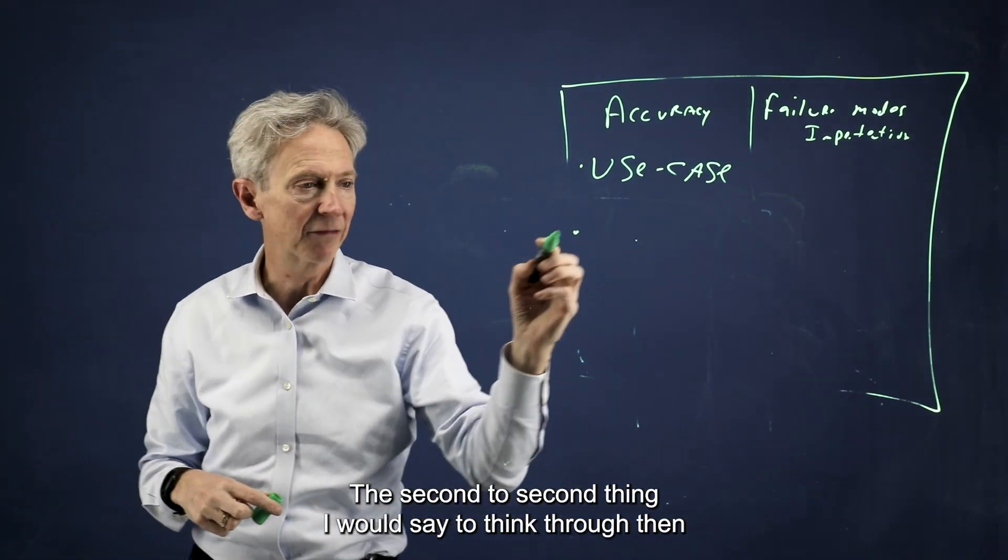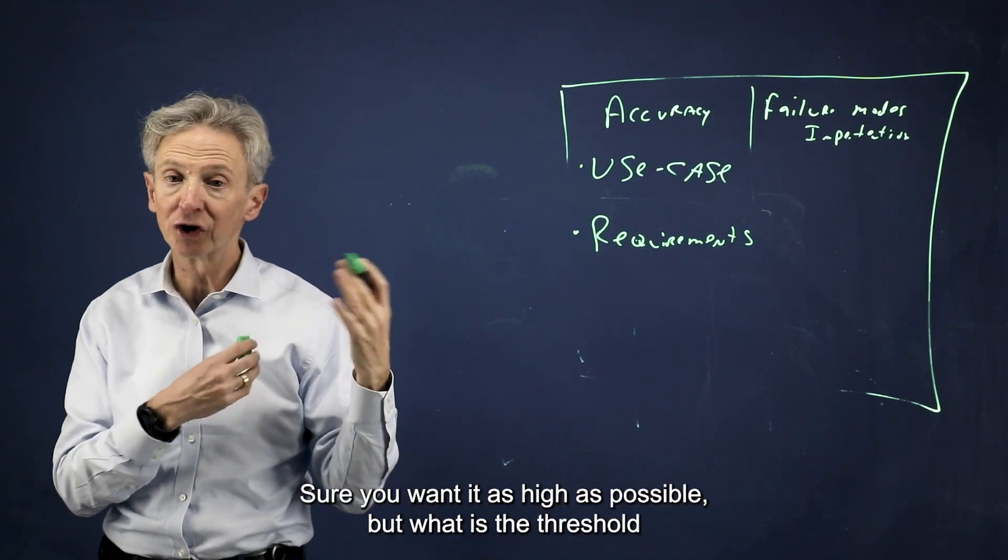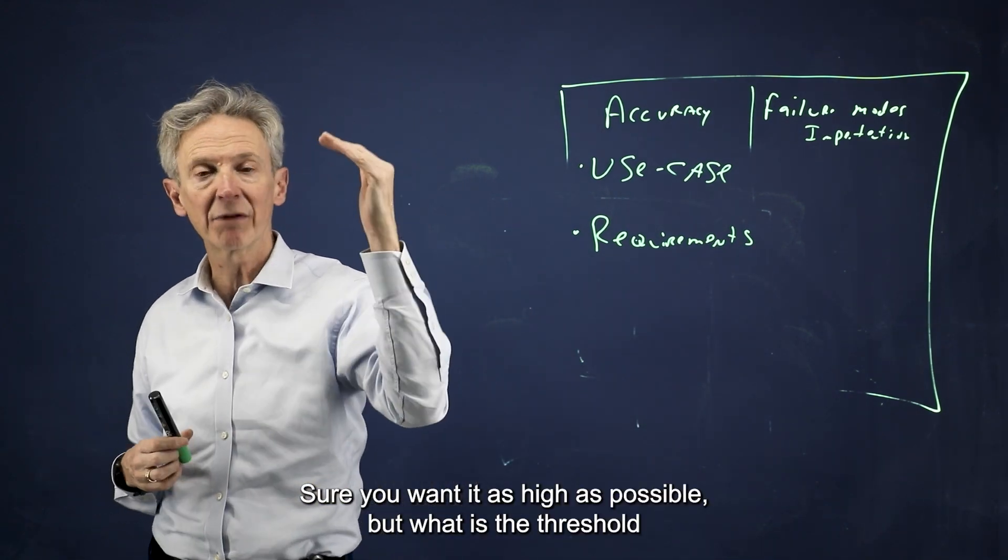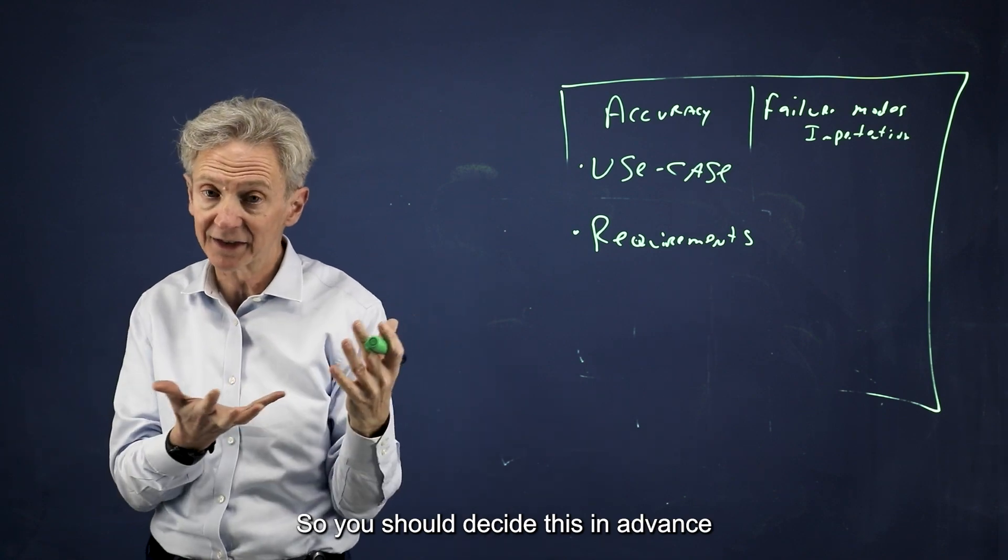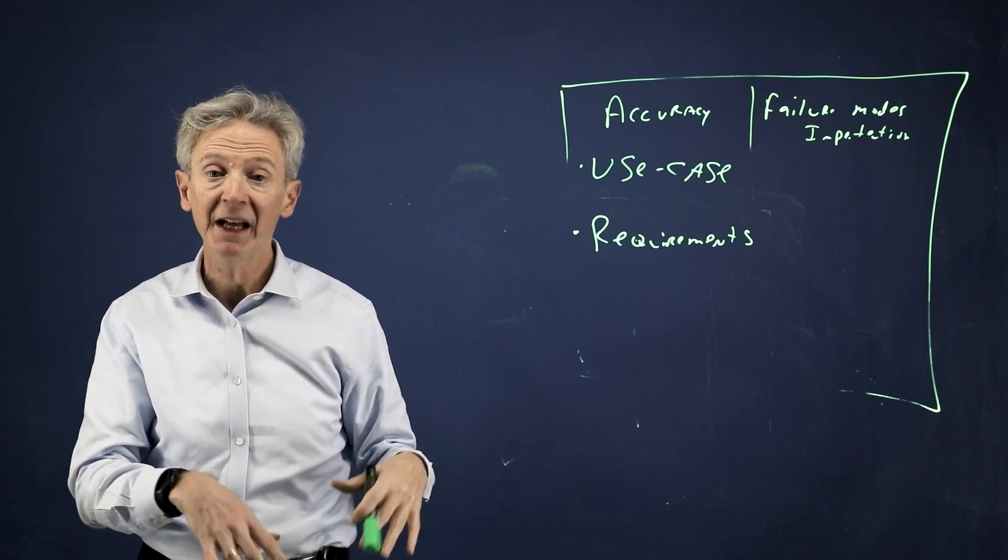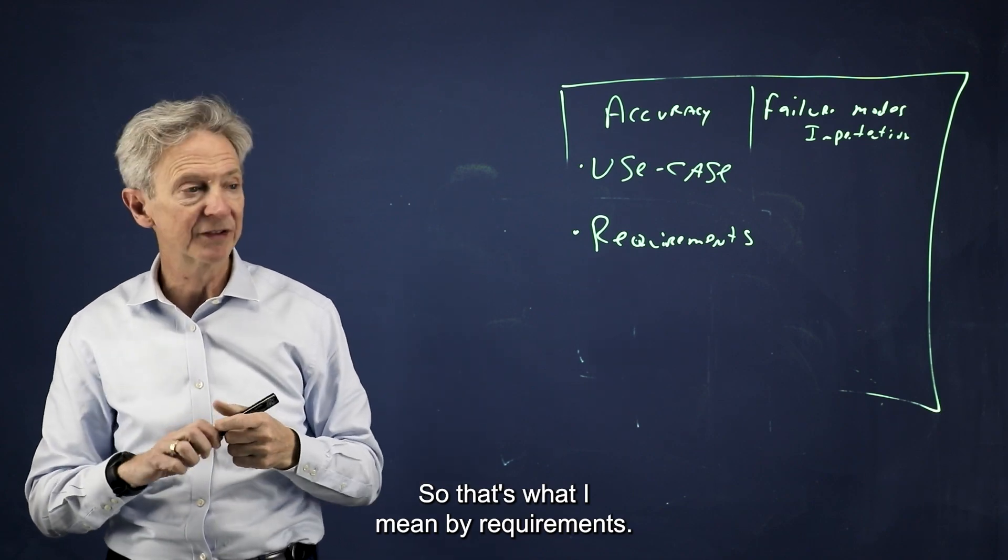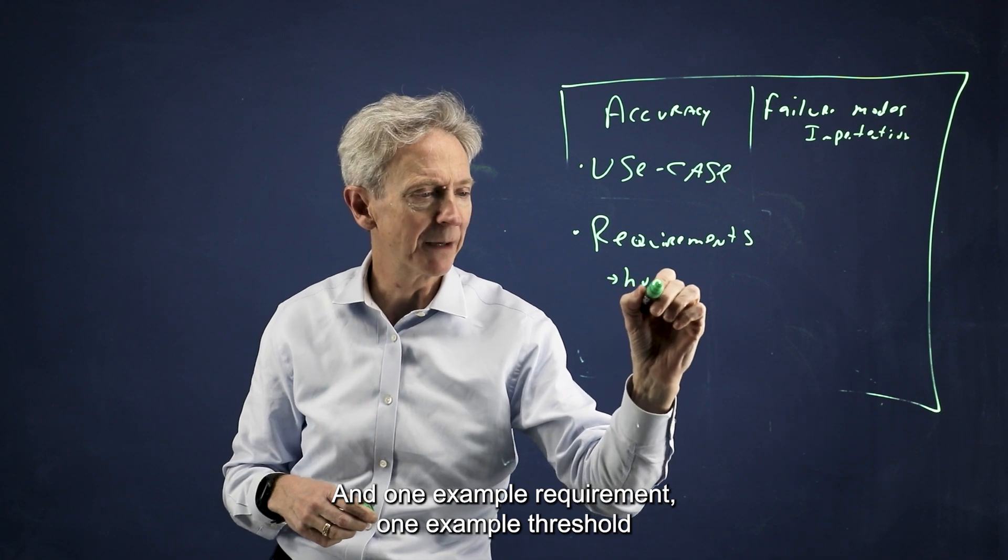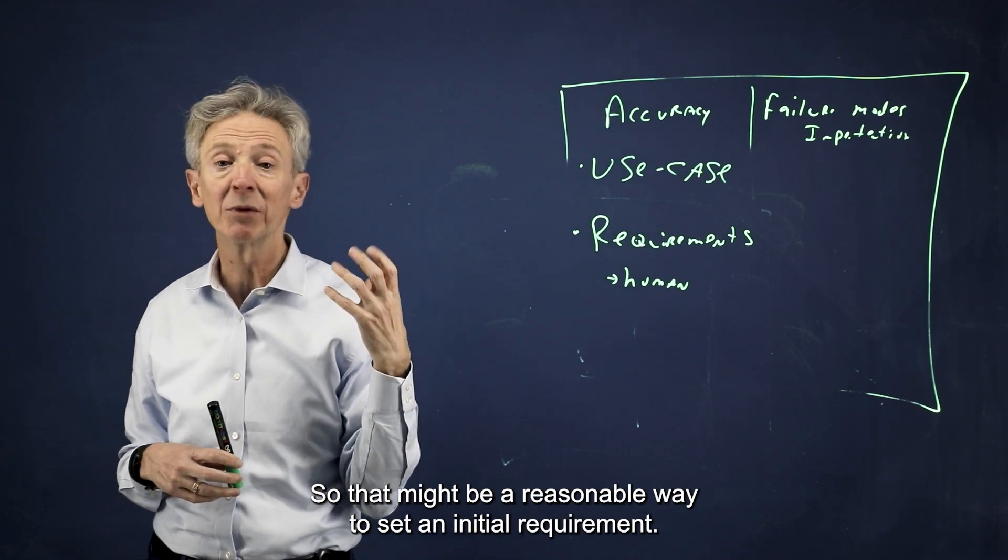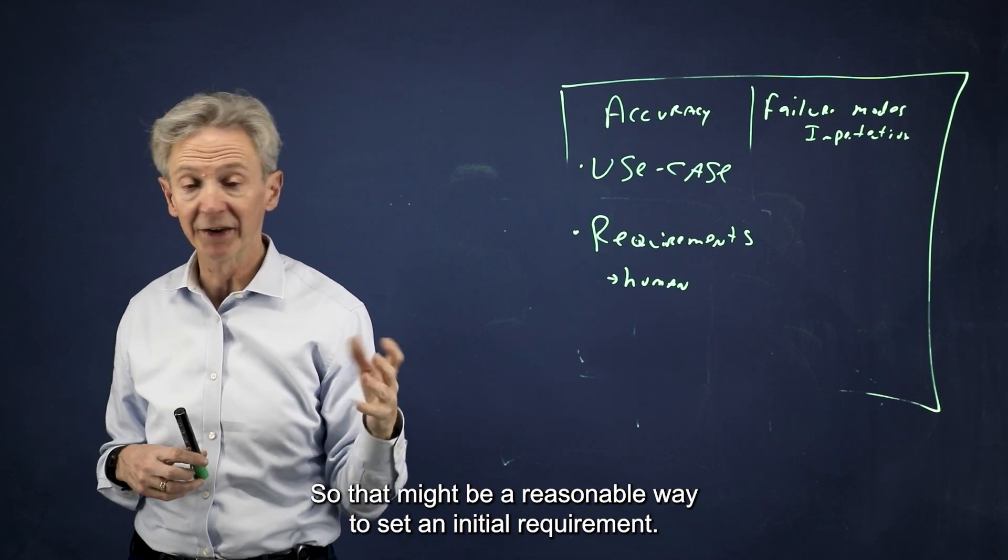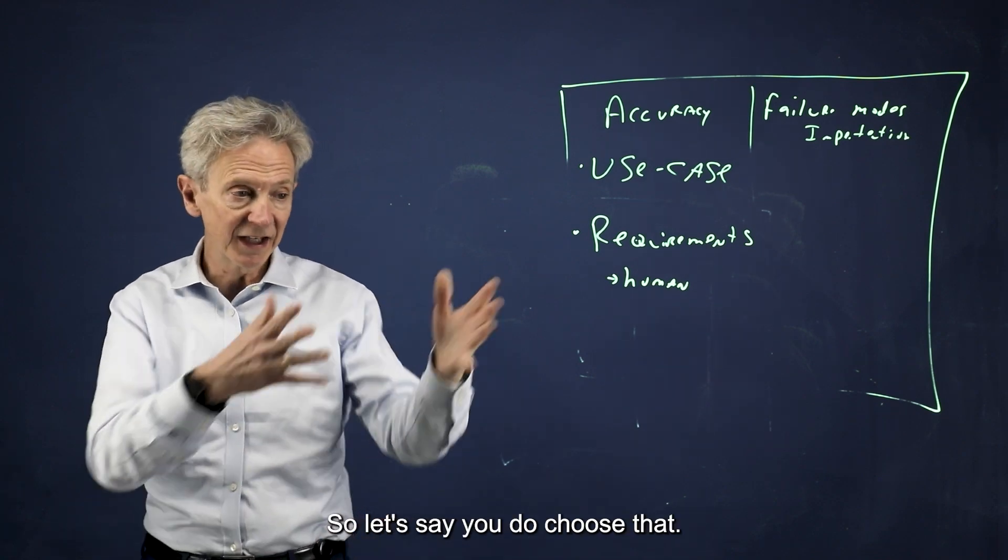The second thing I would say to think through is what are the requirements for accuracy? Sure, you want it as high as possible, but what is the threshold by which you wouldn't even ship the system or deploy it? You should decide this in advance before you build the system and make that a requirement of the system. If you can't meet the requirement, then you don't deploy the software. One example requirement is the system has to be more accurate than a human.